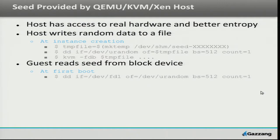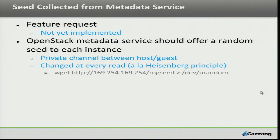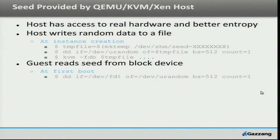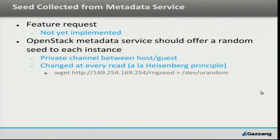The other way to do it would be through the metadata service — another feature request, not yet implemented. The OpenStack metadata service should offer a random seed to each instance. That's a private channel between host and guest. The only reason to do it as a block device is so we can do it at the earliest point in initramfs; to do it via the metadata service, we need networking up and readable. For bonus points, let's implement the Heisenberg principle where every time you read it, it changes — a single read gives you 4096 bytes of random seed, and you read it again, it's another different 4096 bytes. That way you can't ever see what came before or what's coming next.